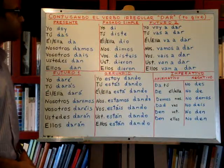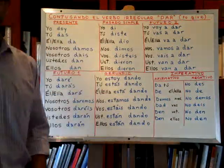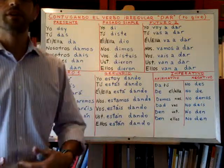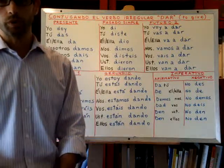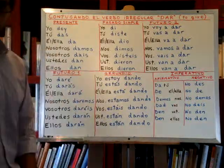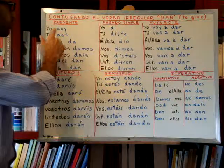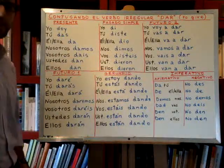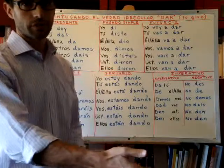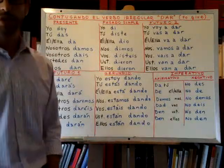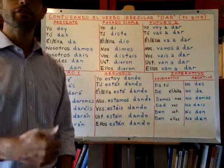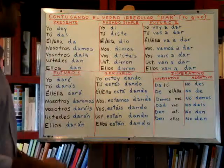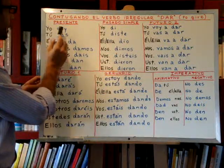For example, 'yo doy las gracias' means 'I say thank you.' In Spanish, to thank, we say 'to give the thanks' — that's how we literally speak in Spanish: 'I give the thanks,' yo doy las gracias. Or we can say 'I give you this' — yo te doy esto. Esto means 'this.' That pronoun — you, him, her — goes in between the subject and the verb.